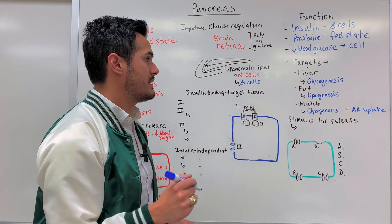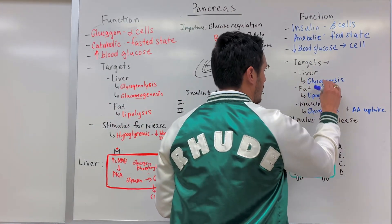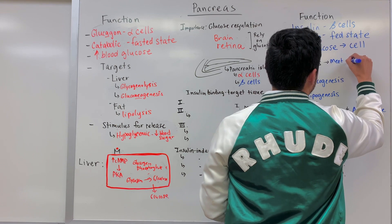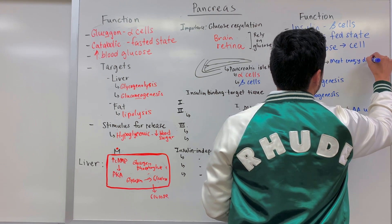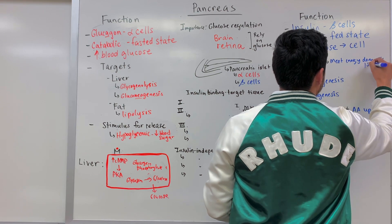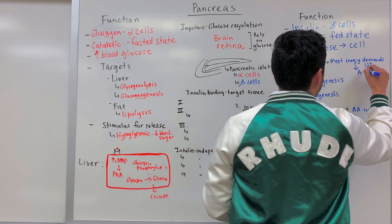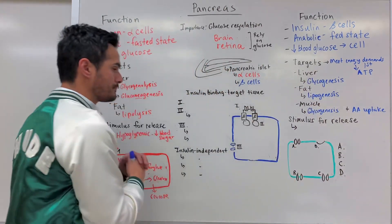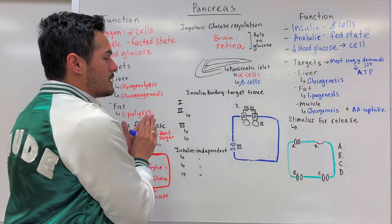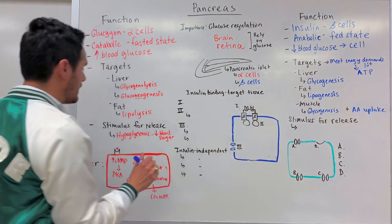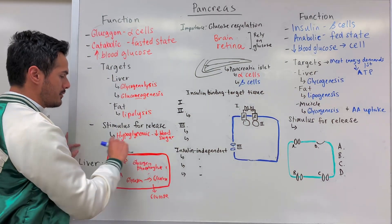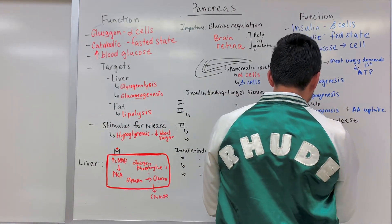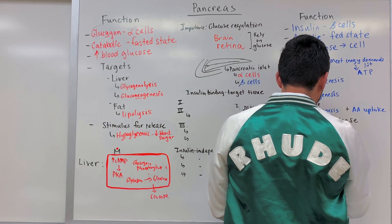One important thing to mention: yes, we are building these things, but we always have to meet the energy demands first — meaning we have to have enough ATP within all of our cells before we start to build things. The stimulus for insulin release is whenever we are hyperglycemic, meaning we have high blood glucose levels.